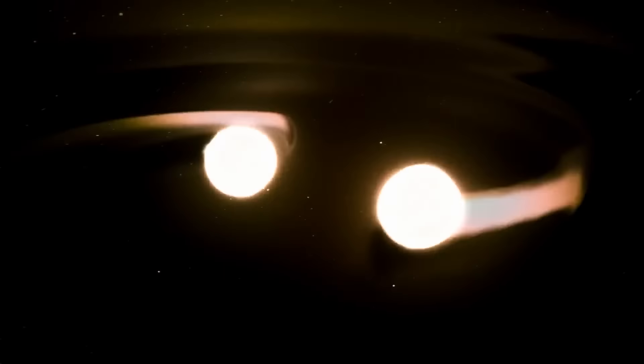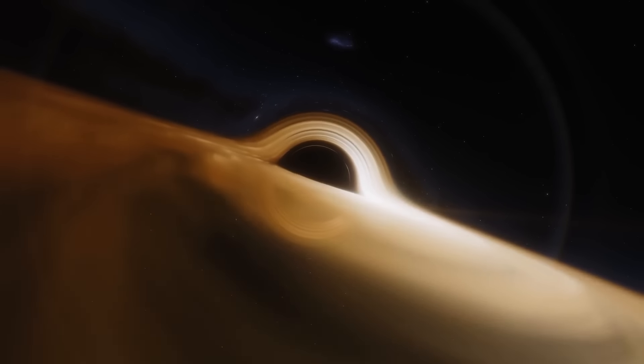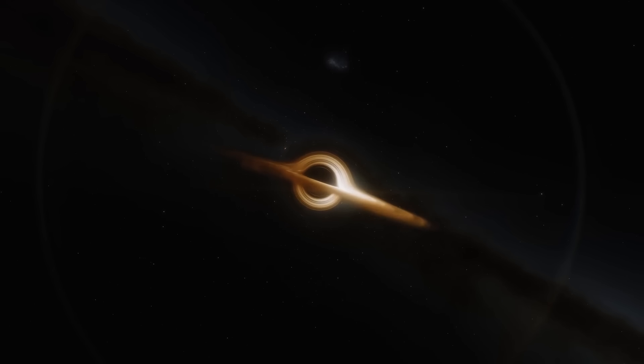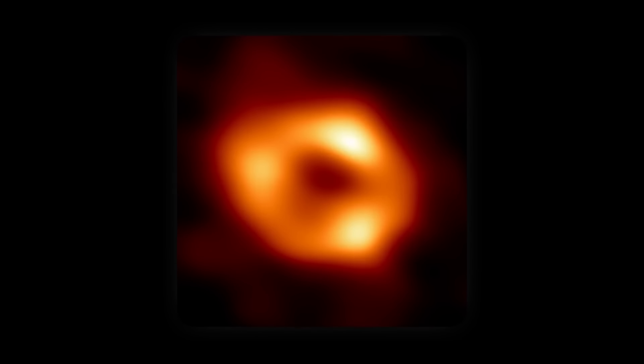Smolin suggests that when a massive star collapses into a black hole at the end of its life cycle, the intense gravitational forces within the black hole's singularity could trigger the formation of a new universe. This process, hypothesized to occur within the event horizon of the black hole, would initiate the expansion of a new space-time domain with its own set of physical laws and constants.